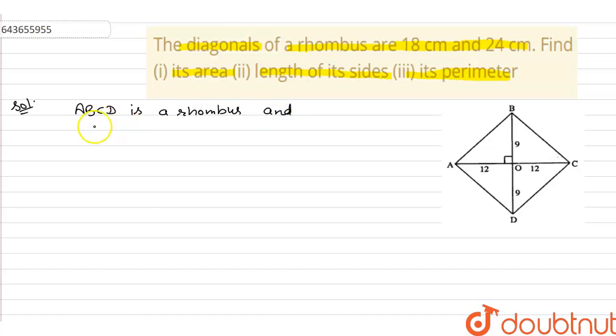And diagonal AC is equal to 24 centimeter, and diagonal BD is equal to 18 centimeter.